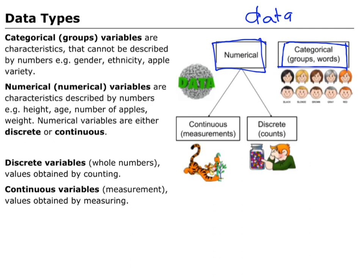Anything that we can turn into a number is numerical. Within the numerical category, we can separate that into two types: continuous data and discrete data. Continuous is when I'm measuring — for example, measuring your height or your weight. Whereas discrete data is count data — counting how many credits you achieved, or the number of pens in your pencil case. When it has to be a whole number because you're counting it, those are your discrete variables.